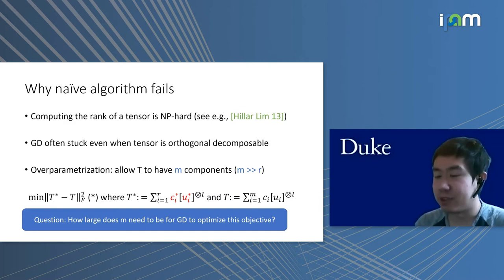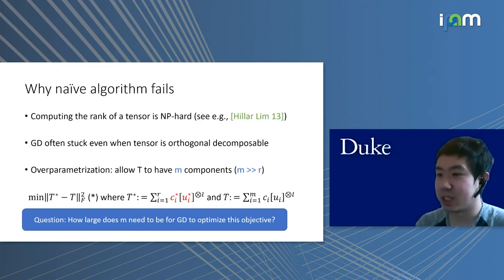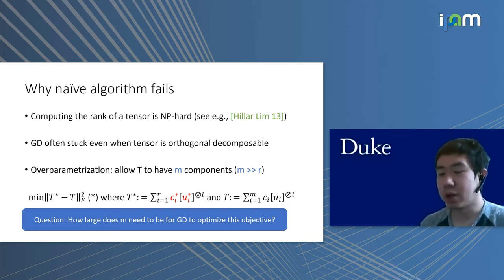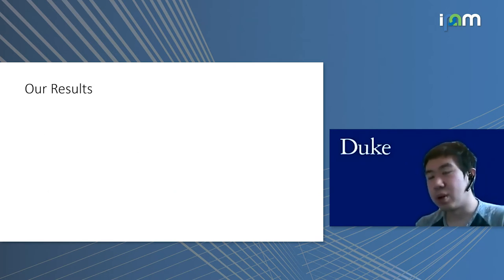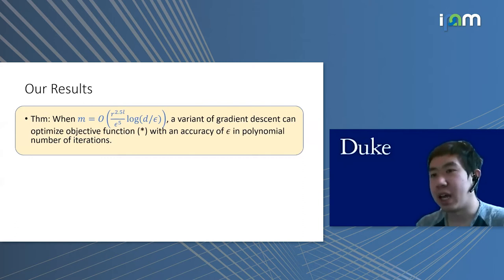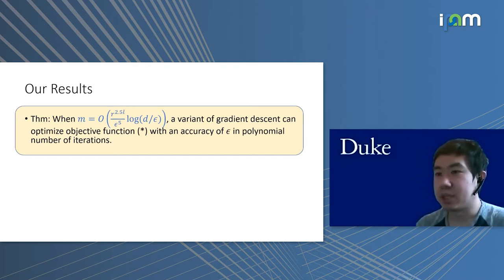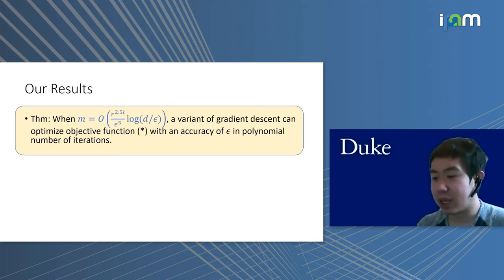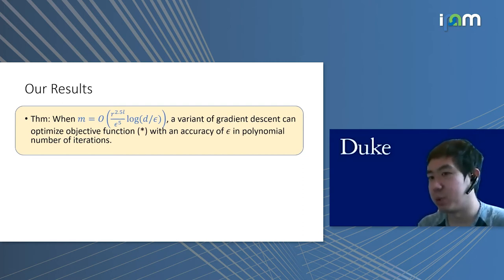We know the minimum of this objective should be zero, because if M equals R there is an optimal solution with c_i equal to c_i-star and u_i equal to u_i-star, giving objective value zero. What we can show is: even without assuming any special structure on the original tensor other than rank R, if M equals roughly R to the power of L over poly(epsilon), there is a variant of gradient descent that optimizes this objective with accuracy epsilon—finding a tensor T within distance epsilon of T-star—in a polynomial number of iterations.